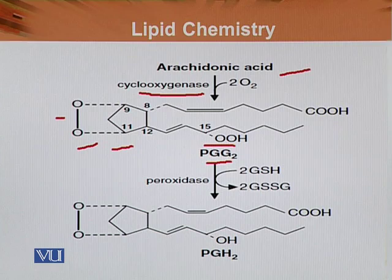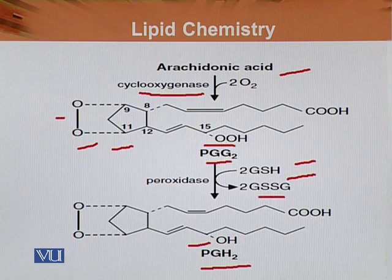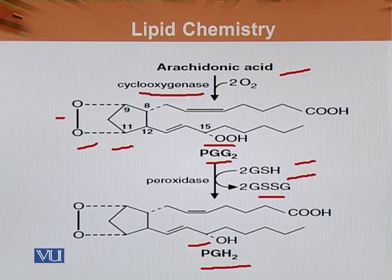PG G2 is reduced to PG H2 because one oxygen is removed in the process. PG G2 is reduced to PG H2 by glutathione — specifically reduced glutathione, which becomes oxidized glutathione in the process. So the action of glutathione is to reduce prostaglandin G2 into prostaglandin H2.